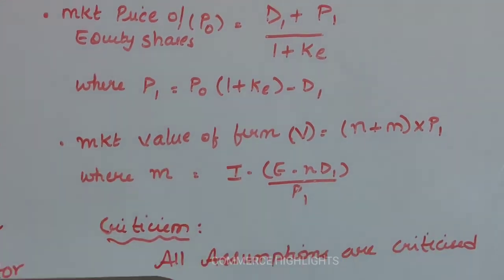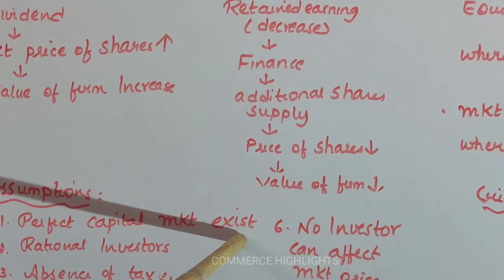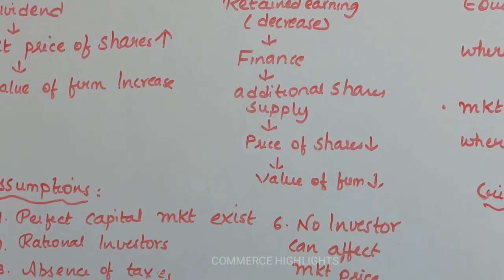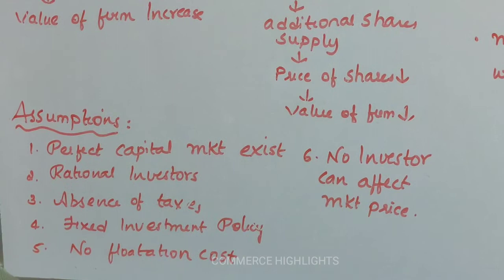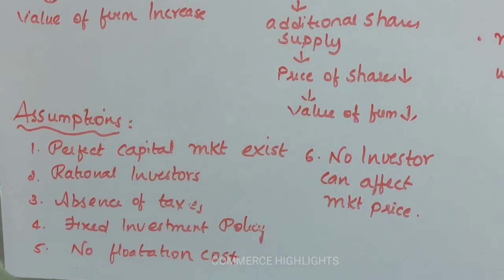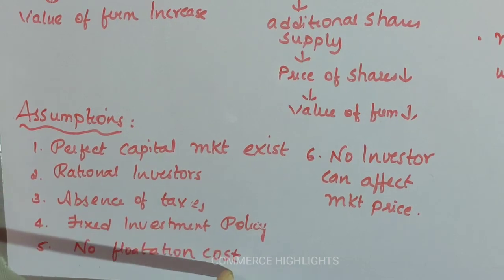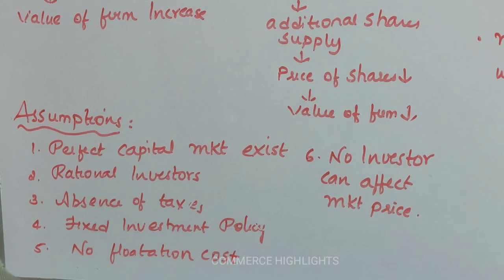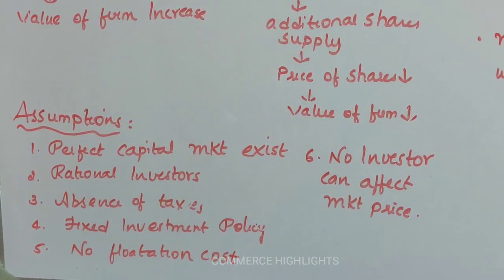Turning to the criticisms of this theory: all assumptions given by MM are criticised. First, perfect market — in reality, perfect markets do not exist. Second, rational investors — many financialists argue that investors will not have perfect knowledge regarding the market. Third, absence of taxes — in reality, no firm operates without taxes. Fourth, fixed investment policy — in practice, a firm will not have a fixed investment policy; the investment policy keeps changing. Fifth, no flotation cost — in practical life, there will always be flotation costs such as brokerage fees and stamp fees; all buying and selling transactions involve flotation costs. These are the criticisms of this theory.